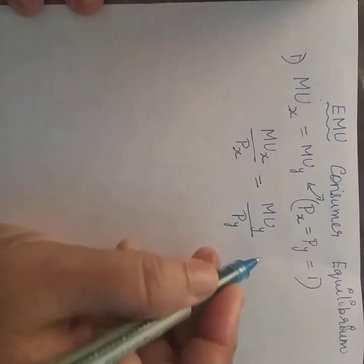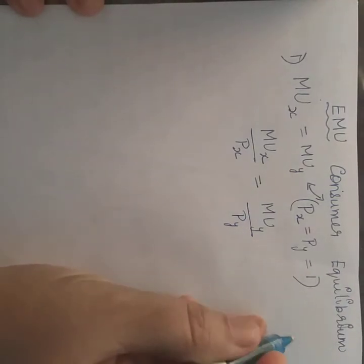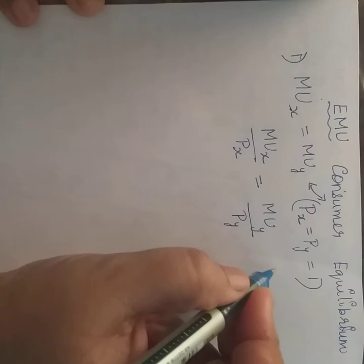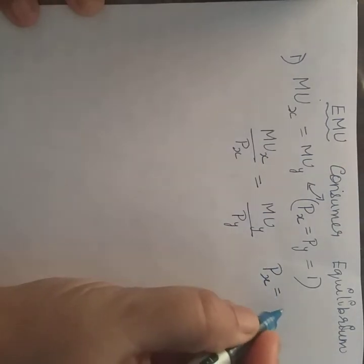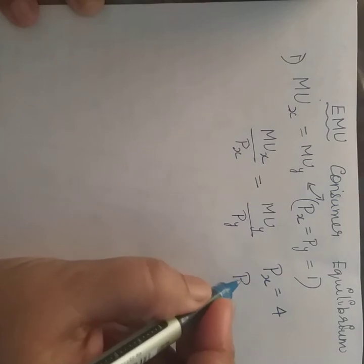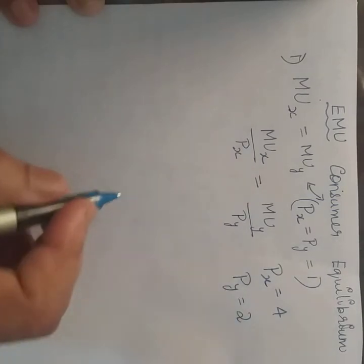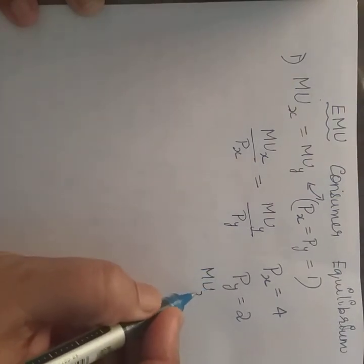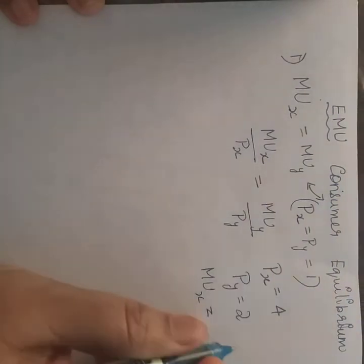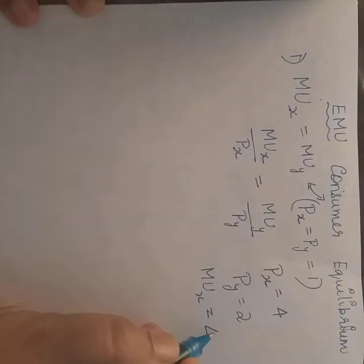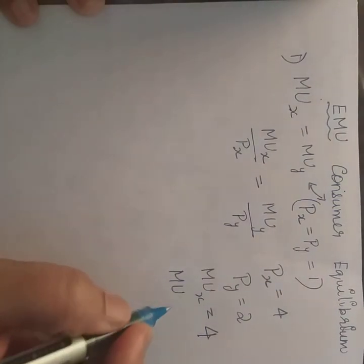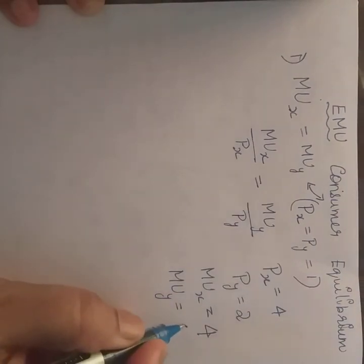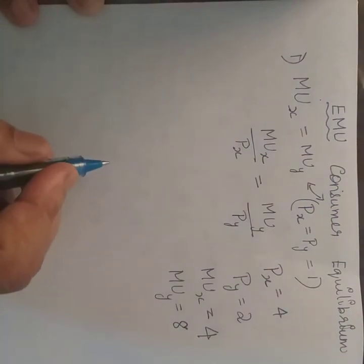Let us take up an example wherein the prices of the two commodities are: PX is 4 and PY is 2. The marginal utility of X is given as 4 and the marginal utility of Y is given as 8.